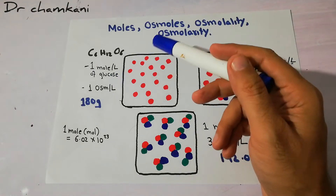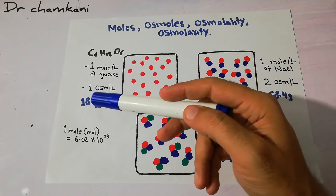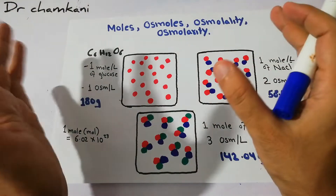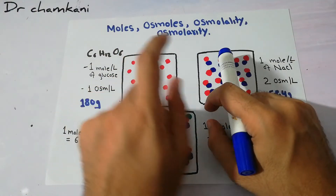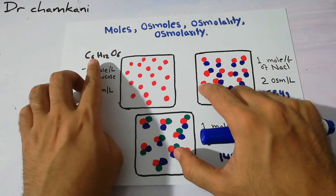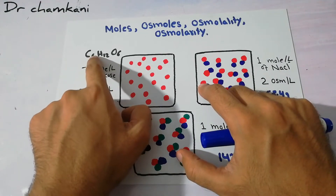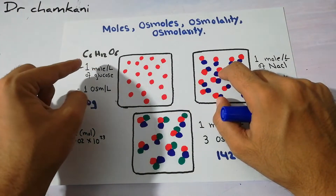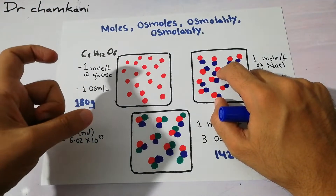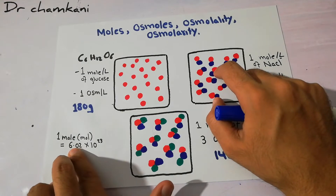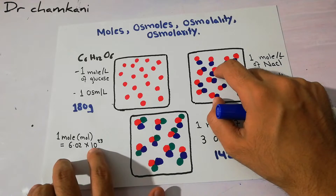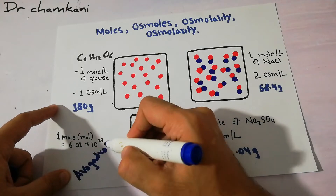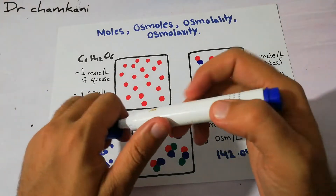A mole is the weight of a substance — it is basically a number of particles of that specific element or compound. One mole of any substance will always contain 6.02 × 10²³ particles. This is Avogadro's number, and one mole of anything will contain this many particles.